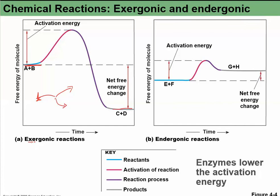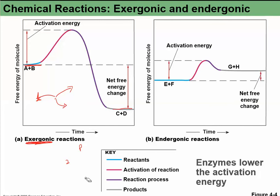ATP breaking its bond to become ADP plus phosphate is an exergonic reaction — it releases energy. We have lots of exergonic reactions in our body, and many other reactions that require an input of energy — those are called endergonic reactions.